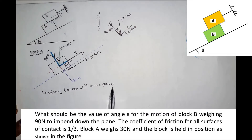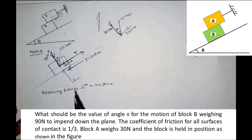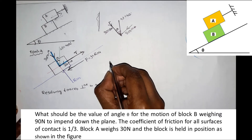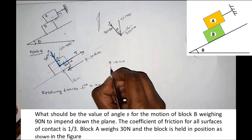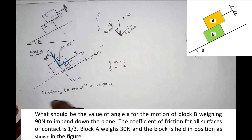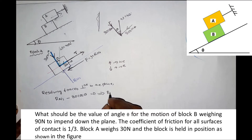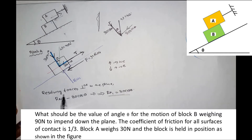Resolving forces perpendicular to the plane: Rn1 equals 30 cos theta. Using the sign convention — force upward is positive, force downward is negative — Rn1 upward minus 30 cos theta equals zero, therefore Rn1 equals 30 cos theta.